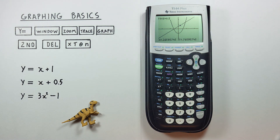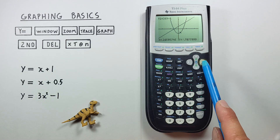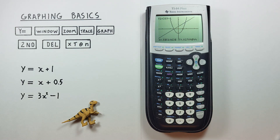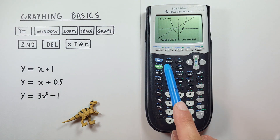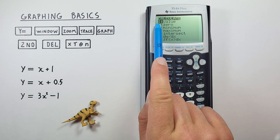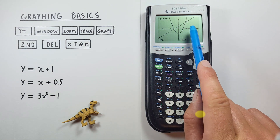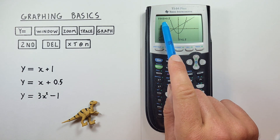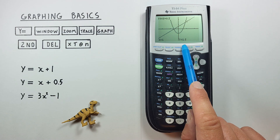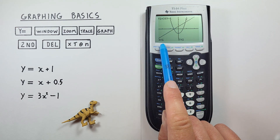If we want to see that on the other function, all we have to do is hit the up or down arrow key. If we hit down, our cursor jumps to the lower function, and we can scroll along it to see our x and y values. If we want to see our function at a specific spot, we can do second trace and enter a specific value. We'll select 1, hit enter, and say x equals 1. We see our cursor has jumped to the 1 on our x plus 0.5 line, and it tells us x equals 1 and y equals 1.5. If we press the up arrow key, we jump to the other function where x equals 1 and y equals 2.